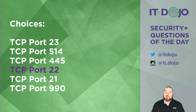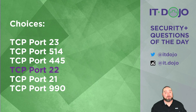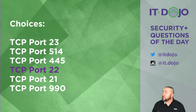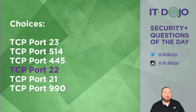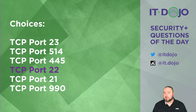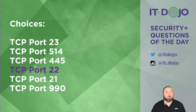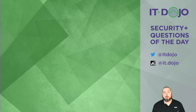The other two choices on the list are port 21 — nope, that's FTP, or at least one of the ports for FTP. And the last choice is port 990. Port 990 is used for FTPS, or FTP over SSL. So port 22, TCP, is the port you're looking for for SCP.